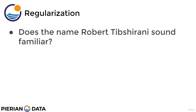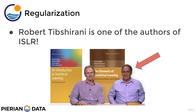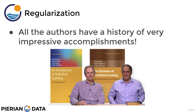Now, this name may sound a little bit familiar, and if it does, that's good news — it means you've been doing the reading, since Robert is actually one of the authors of ISLR. In fact, all the authors have a history of very impressive accomplishments, with each of them having their own Wikipedia article. So hopefully this is enough evidence that this isn't just some random book on statistics — it is the book on statistical learning and machine learning.